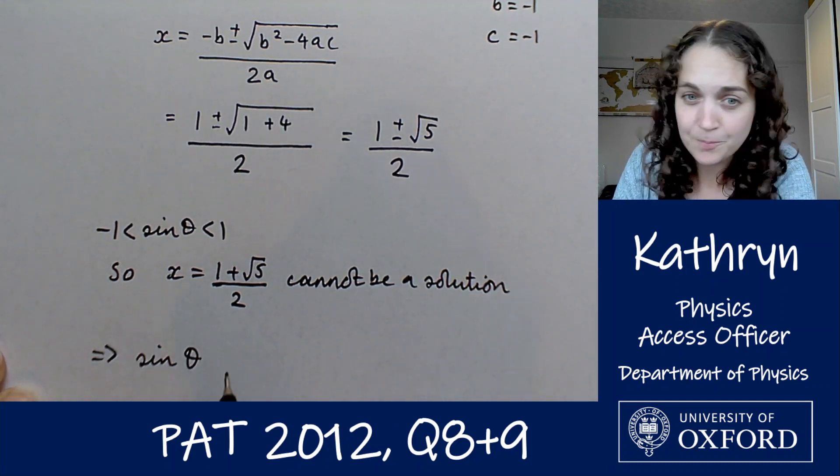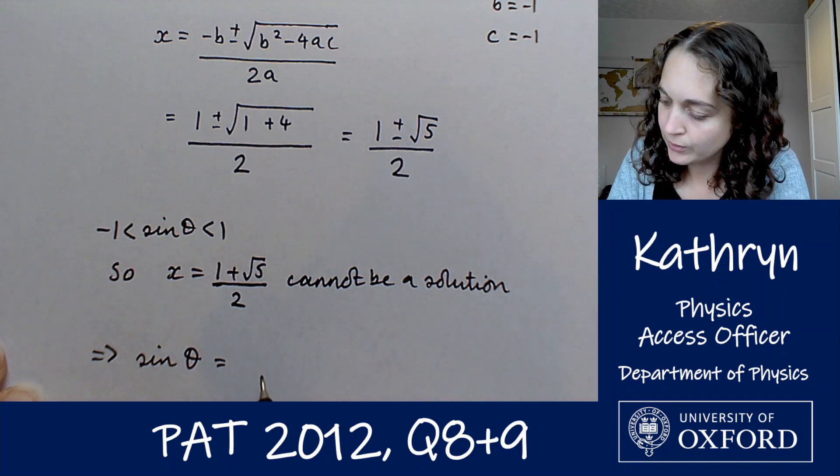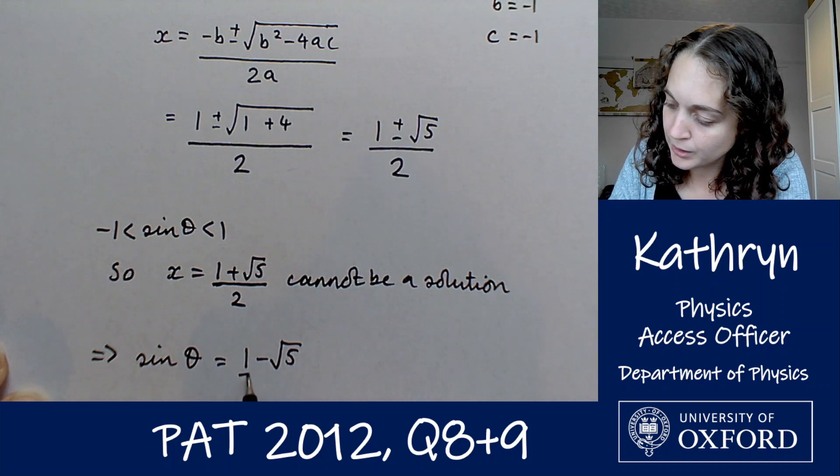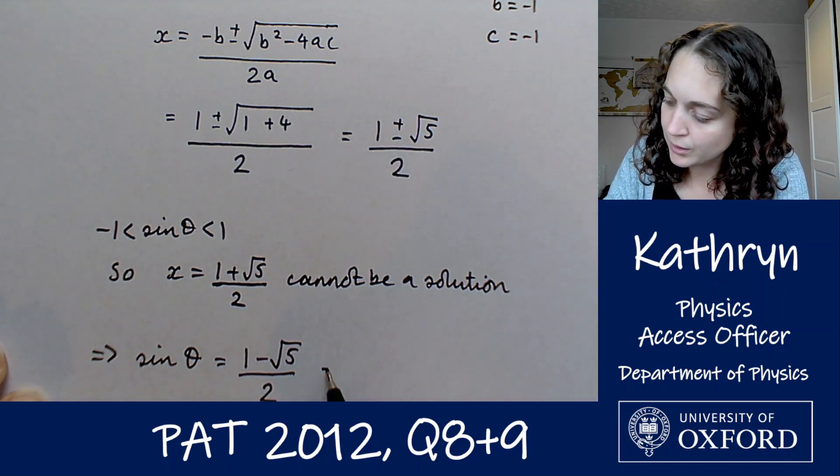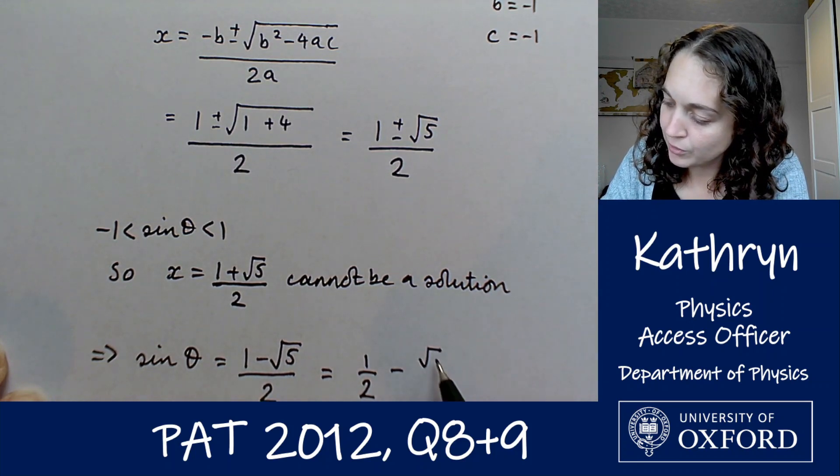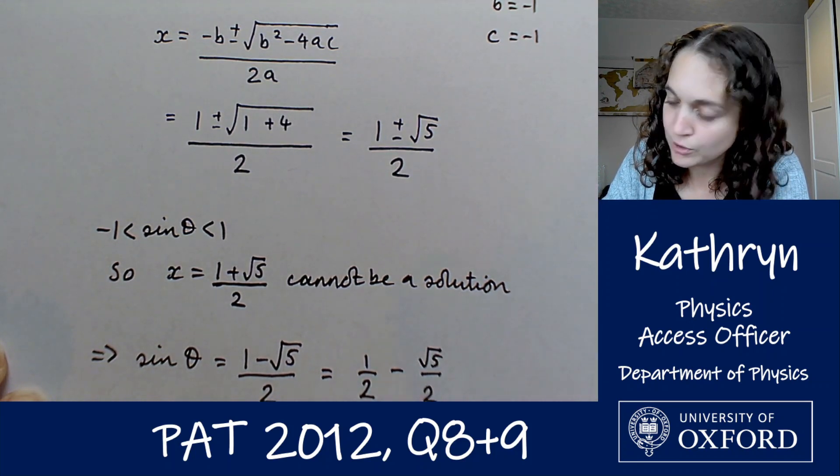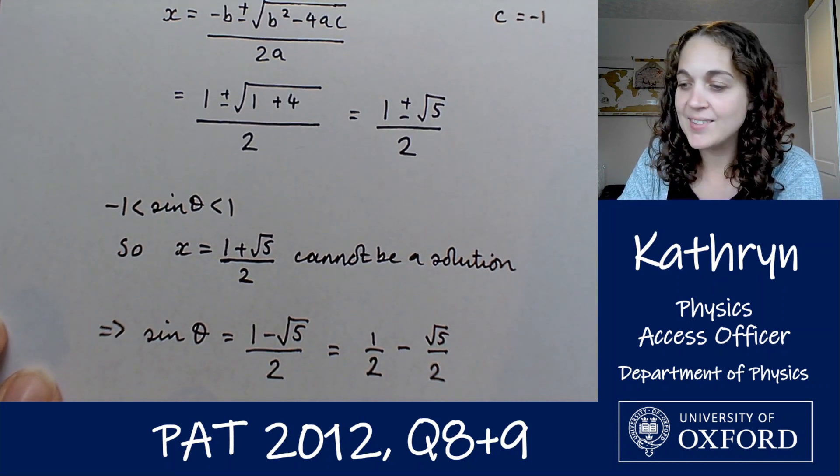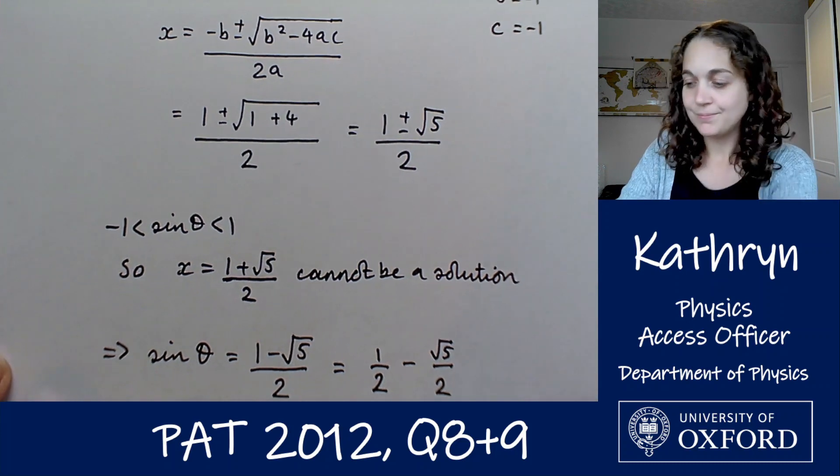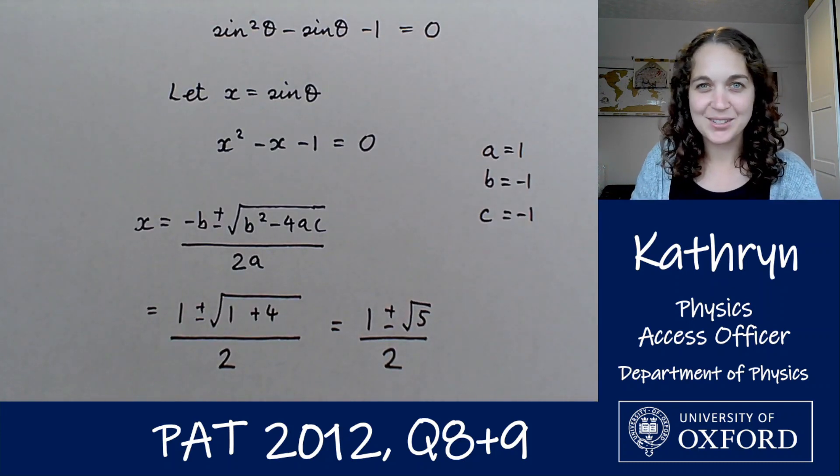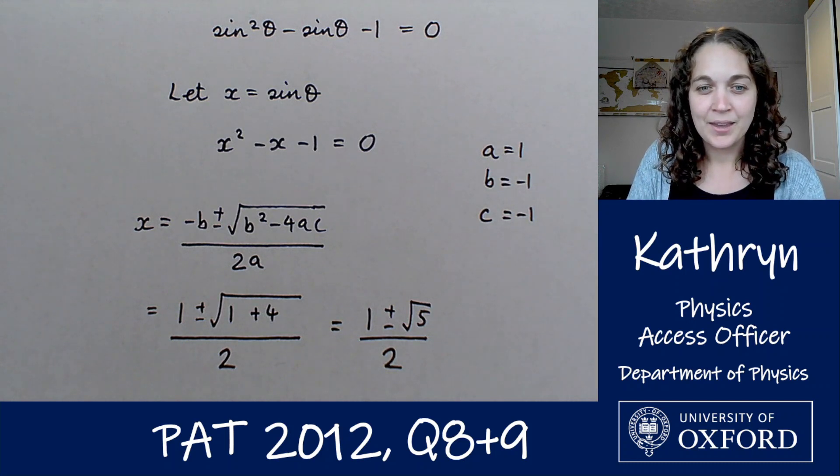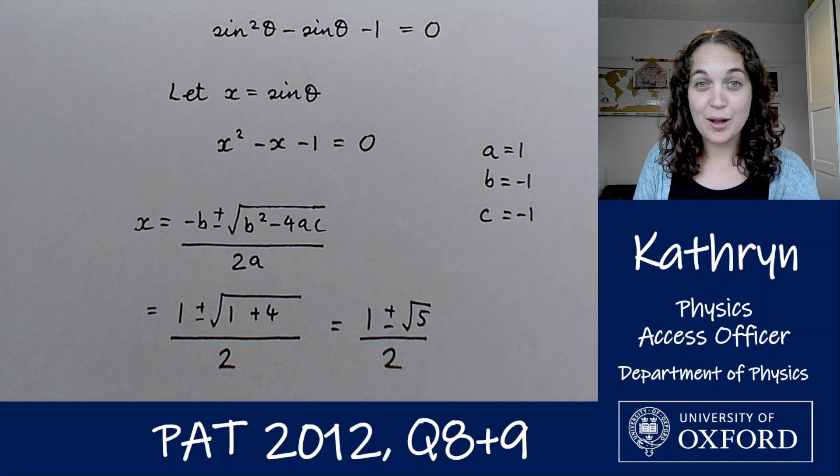So sinθ = (1 - √5)/2, which you could also write if you prefer as 1/2 - √5/2. And there we go, as it has asked us to, we've left our answer in terms of sinθ. But maybe that middle step of writing it out in terms of x might make it just that little bit easier to see what's going on.